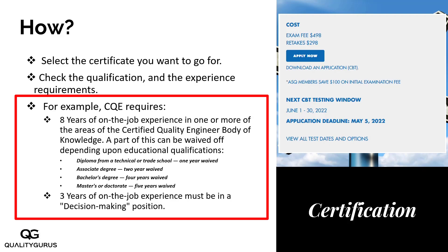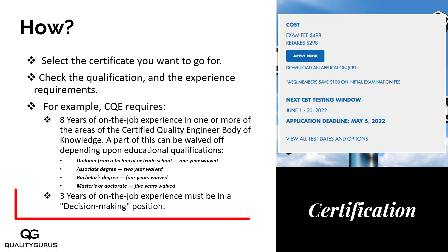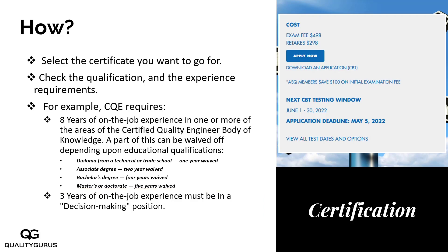Many times people ask me what does 'decision-making position' mean. A decision-making position is any position where you make decisions. For example, even if you are inspecting an item and deciding whether it is good or bad, you are making a decision there. So basically, it means you need to have some related experience — you cannot show totally unrelated experience. Your experience has to be somehow related to the CQE body of knowledge.